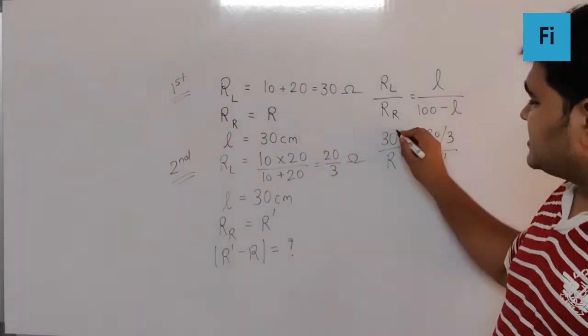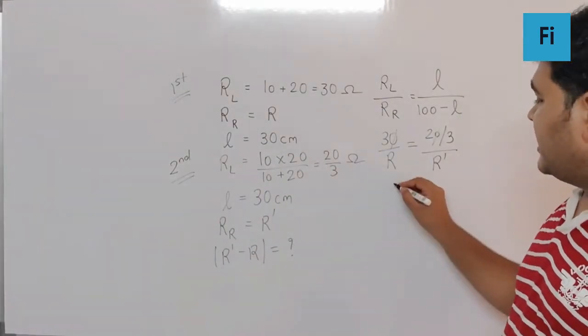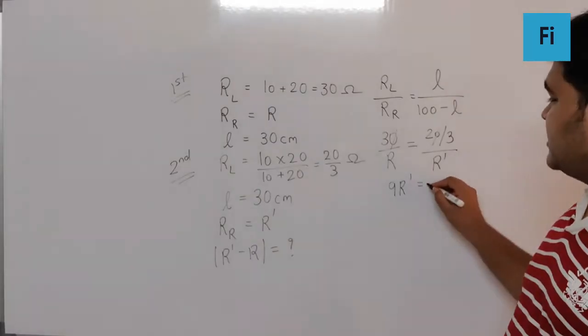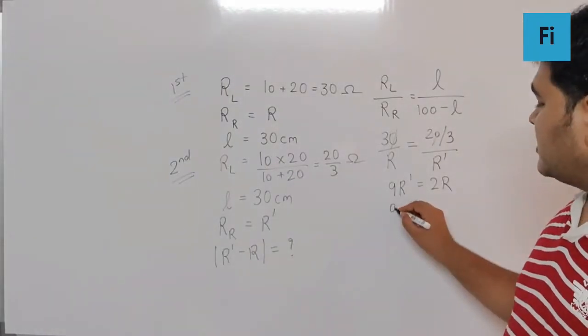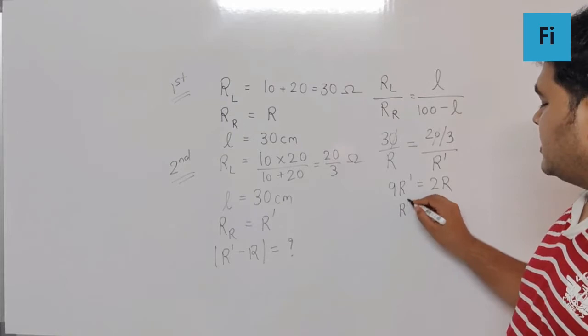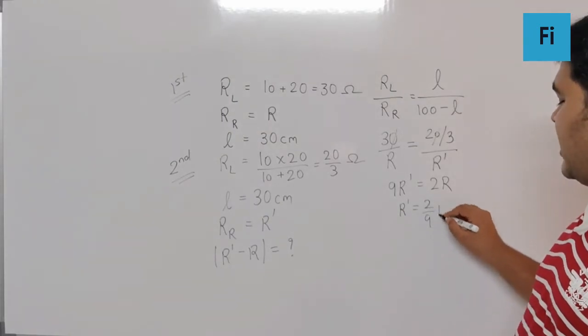Now canceling and simplifying, 9R prime equals 2R. That means R prime is 2 by 9 R.